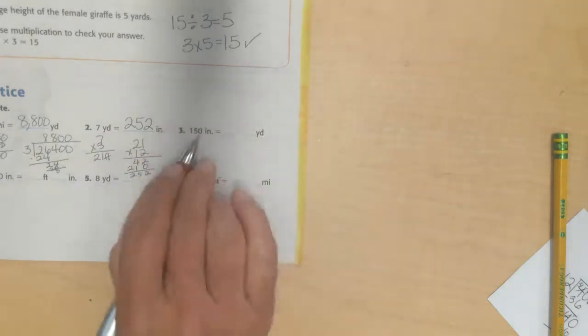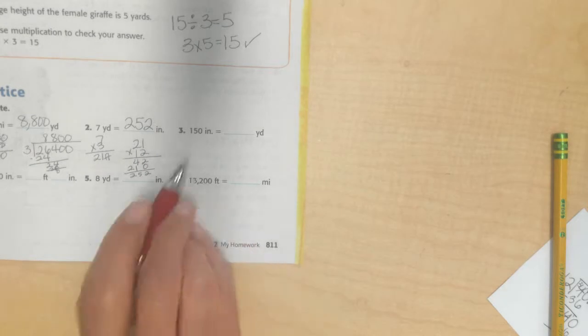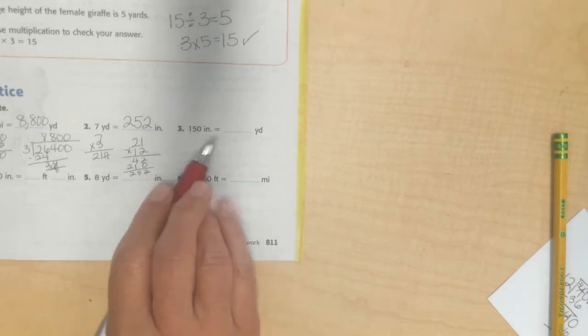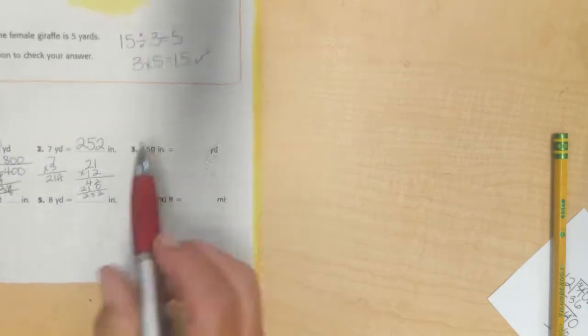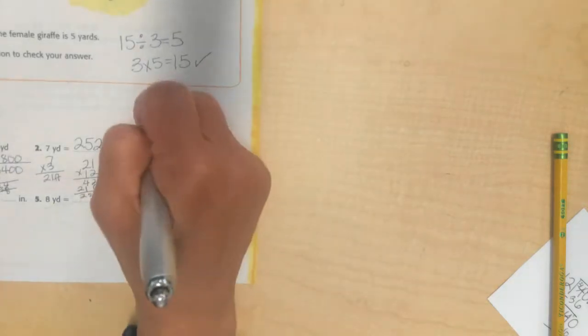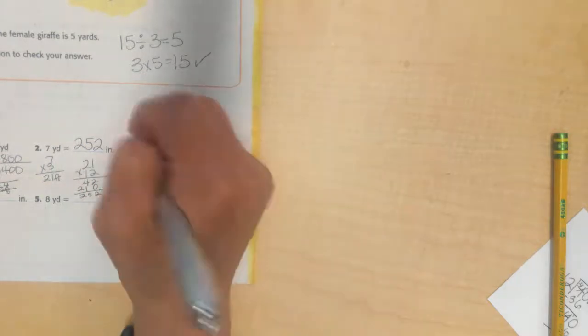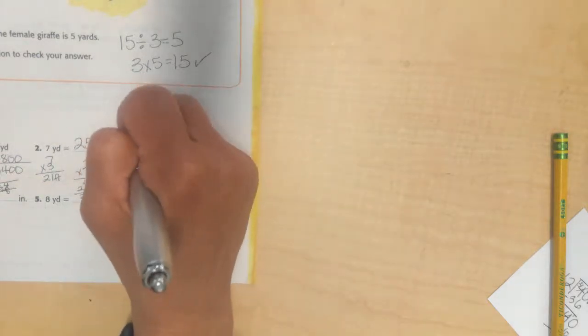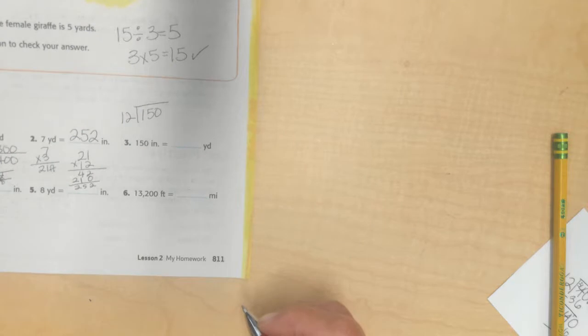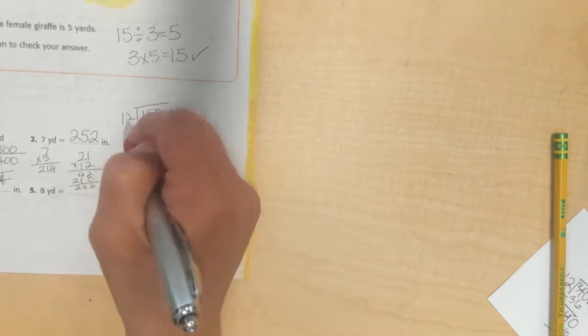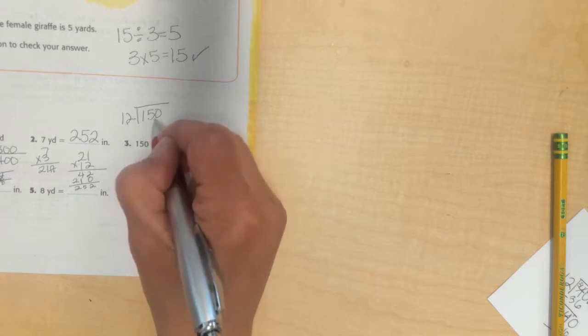I'm going to do my work up here for this problem so I don't go into this problem down here. So, I have 150 inches. I need to break it up and figure out how many yards this is. I'll do 150 inches. I'm going to divide it up by 12 to figure out how many feet. I could have also divided it by 36 but I'm going to do two steps.